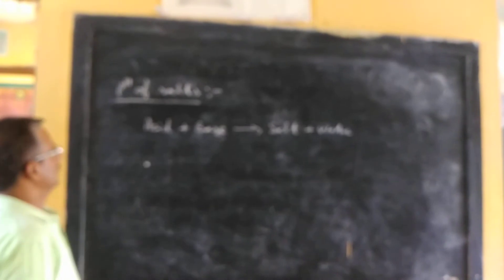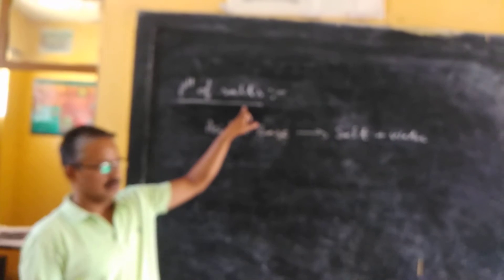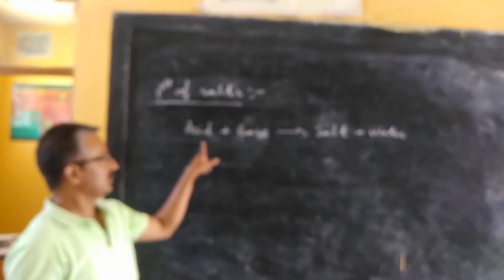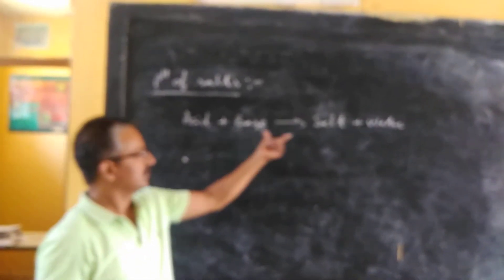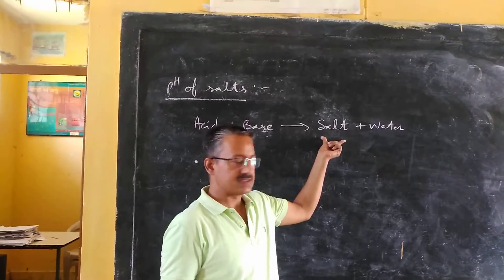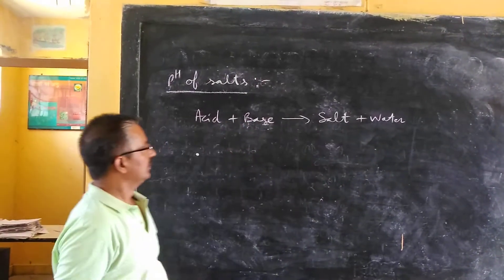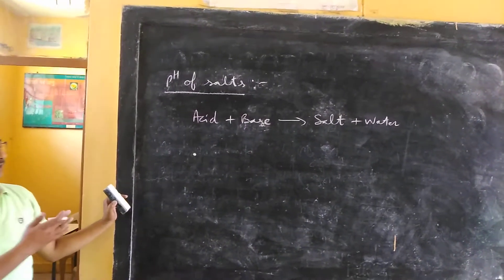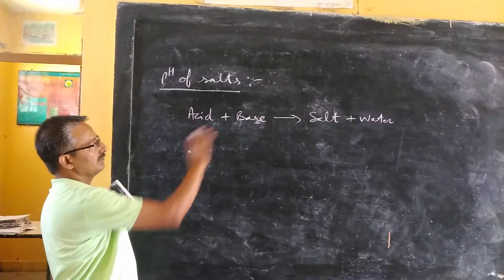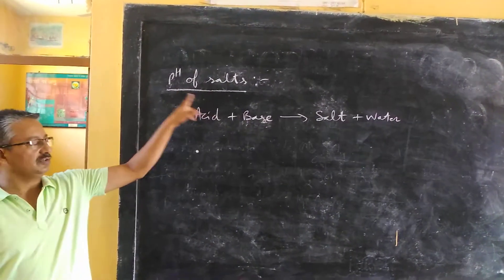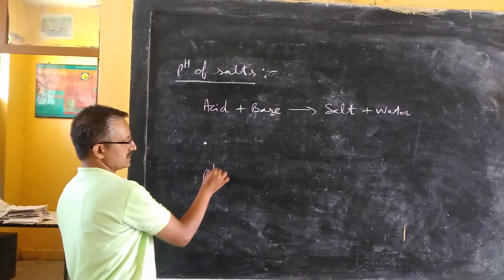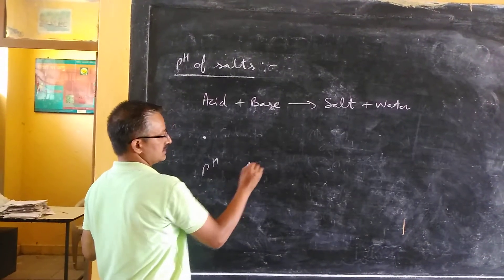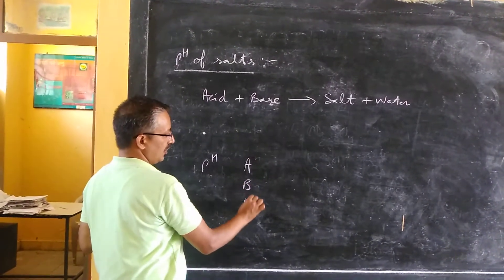The second topic is pH of salts. Salt formation is on the basis of neutralization. When an acid reacts with a base, there is formation of salt and water. So, whatever salt is formed — is there any pH value for that salt? From the pH value, we can tell whether something is acidic, basic, or neutral.